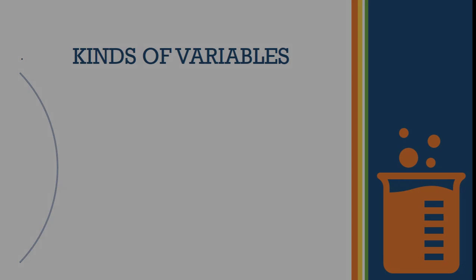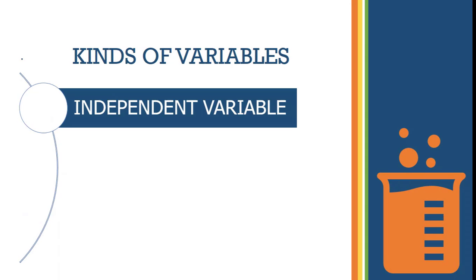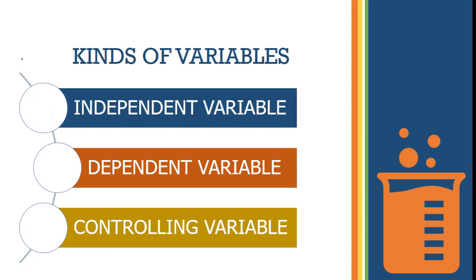There are three kinds of variables. The first one is the independent variable, the second one is the dependent variable, and the third one is the controlling variable.